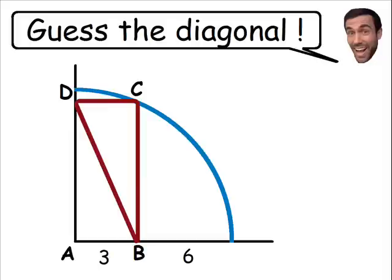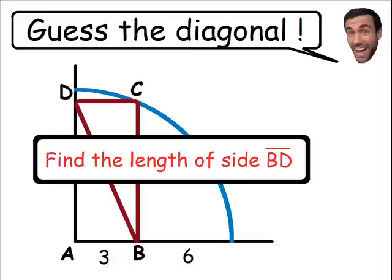We are given some information to help us solve this problem. We know the length from A to B is 3 units and we know the length from B to the edge of the circle is 6 units. So using this information we need to find the length from B to D.